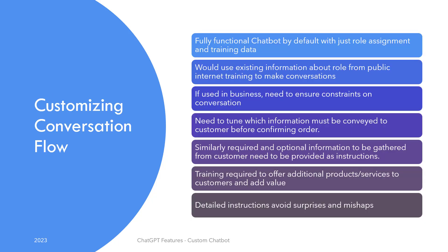Structure and flow of conversation is something additional to the training dataset. ChatGPT would be a fully functional chatbot even without your instructions and could answer queries about your facility and services. But how it responds would not be in your control. Ideally, you want to remain in control of how an automated chatbot conveys and gathers information. As an automated booking agent, you need to ensure it communicates all relevant policies — check-in and check-out times, smoking and non-smoking areas — before confirming a booking. Otherwise, customers might become angry and your business would suffer.